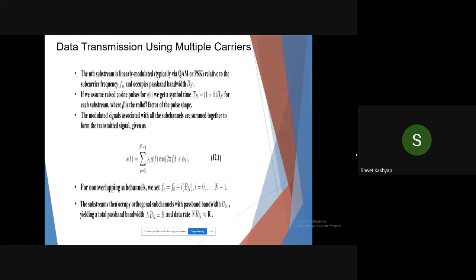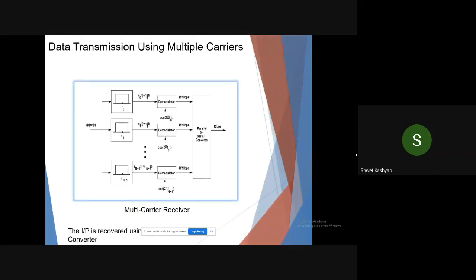That was the transmitter part. This is the receiver part. Here we do the opposite of what we did in transmission. We have to recover the signal which we sent, R_bps. Here we have the demodulator and parallel to serial converter, so it is just the reverse.